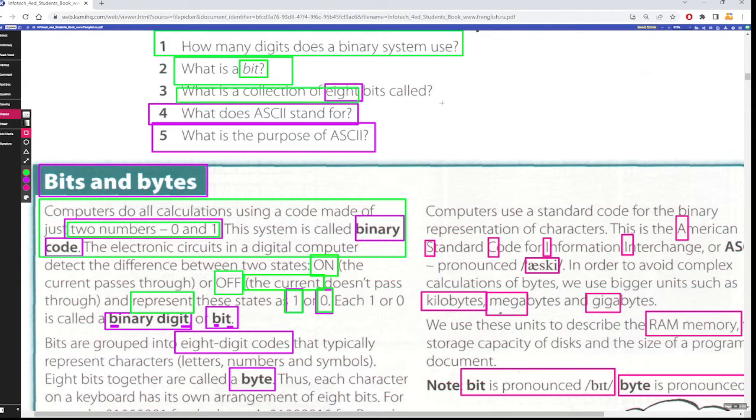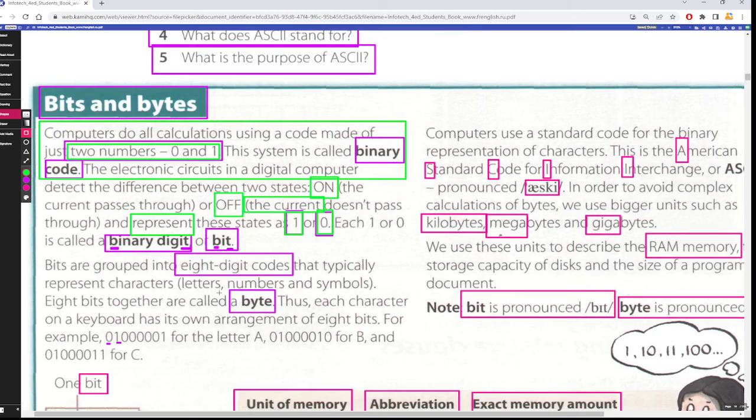And number three, what is a collection of eight bits called? Eight bits, a byte. Eight bits together are called a byte.